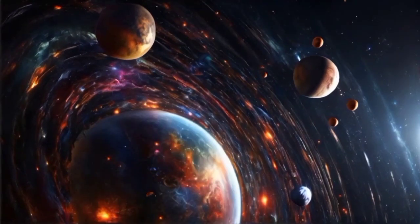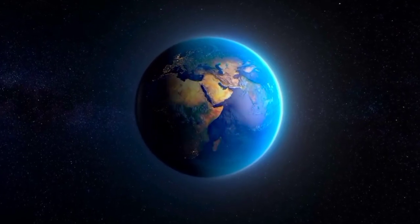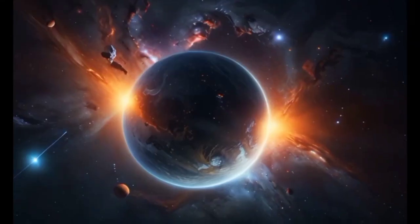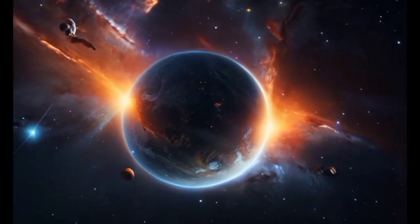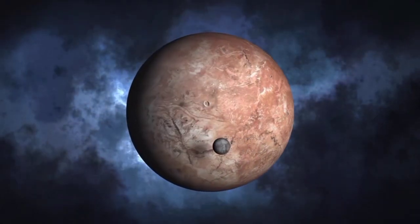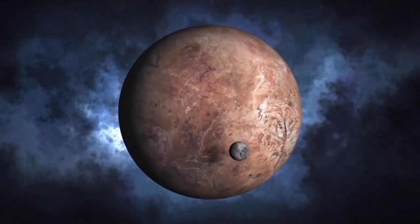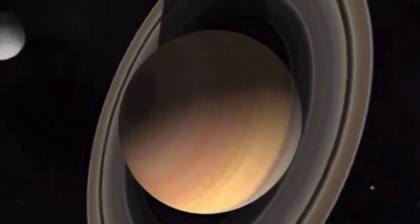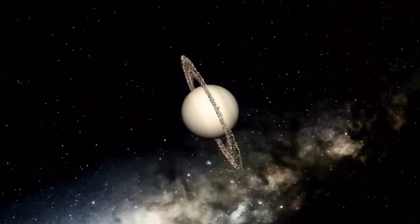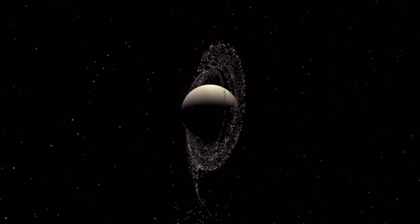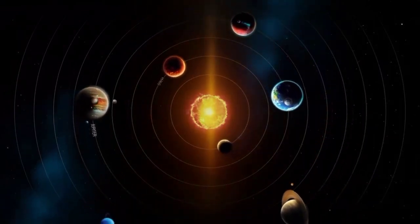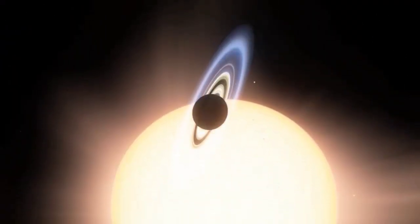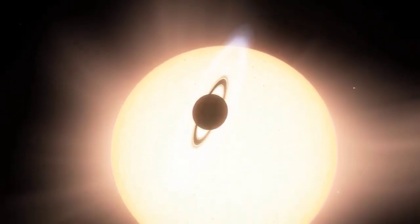Imagine what it might be like to stand on Proxima b. Its star, Proxima Centauri, would appear as a faint red light above, much cooler and dimmer than our sun. Proxima b orbits so rapidly that a year there lasts about 11 Earth days. One side of the planet constantly faces the star, locked in eternal daylight, while the opposite side is shrouded in perpetual darkness. It sounds like something out of a sci-fi novel, but the reality would be far more extreme. On the bright side of Proxima b, any water would likely evaporate into steam due to constant heat exposure. On the dark side, however, water would freeze into solid ice. Proxima Centauri is also not a stable, predictable neighbor like our sun.